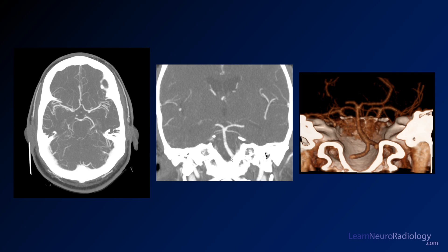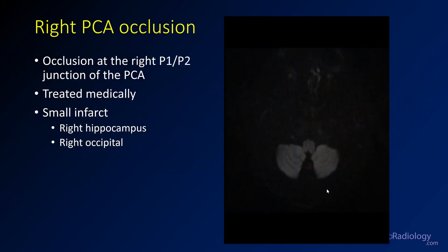If we look at coronal MIPs, we can see it here — the basilar artery and SCA are here, and then the PCA on the right is occluded right there at the P1/P2 junction. Here you can see it again on a volume rendering — just truncation of that PCA. So that's likely a clot at the P1/P2 junction. This is again an occlusion at the right P1/P2 junction.